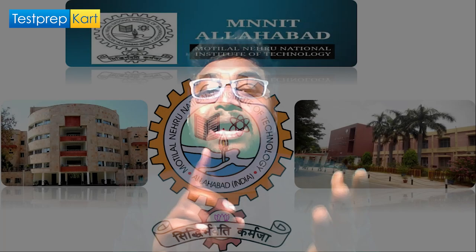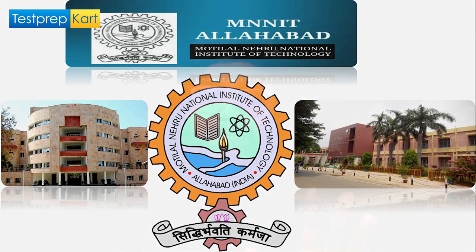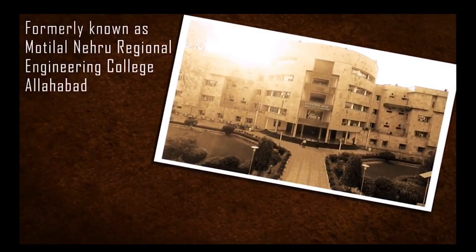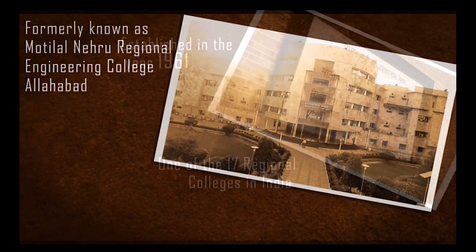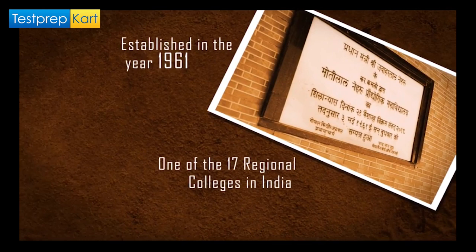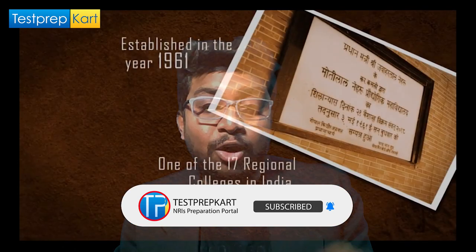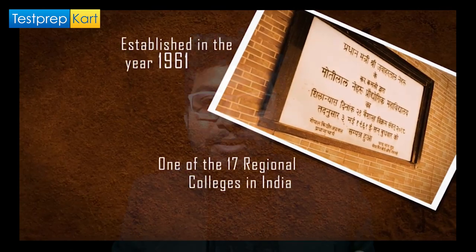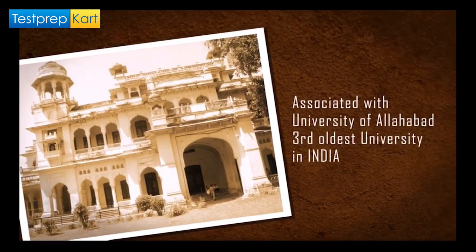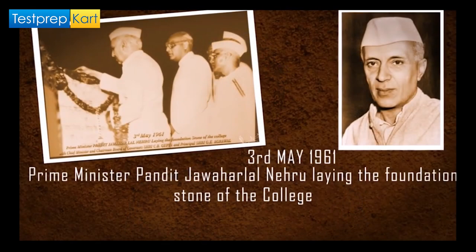MNNIT — Motilal Nehru Institute of Technology — was formerly known as Motilal Nehru Regional Engineering College, Allahabad. It was established in 1961, making it one of the 17 regional colleges in India. It is associated with the University of Allahabad, the third oldest university in India, and was inaugurated on 3rd May 1961 by Prime Minister Pandit Jawaharlal Nehru.